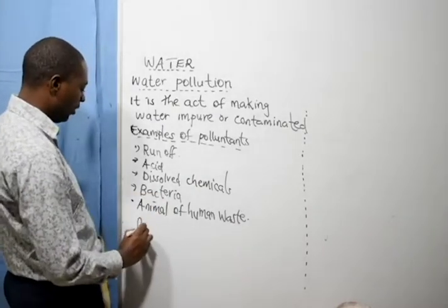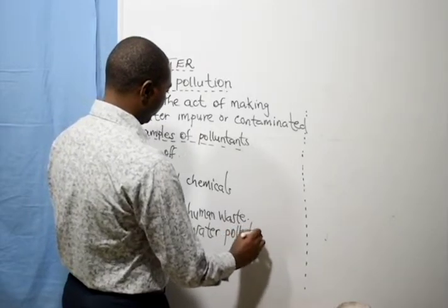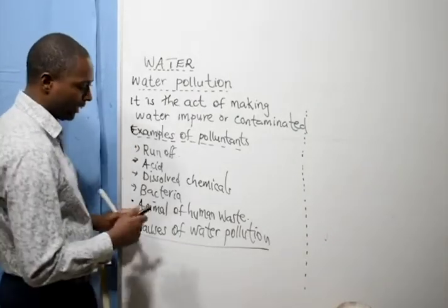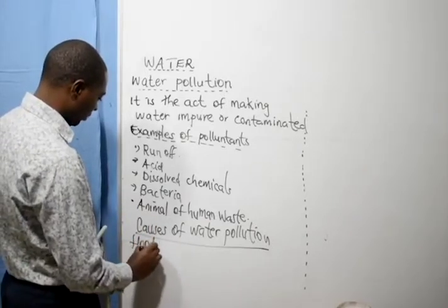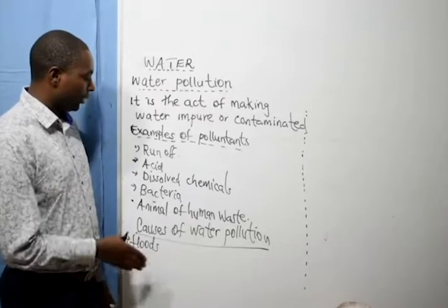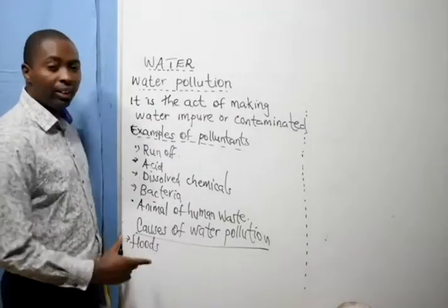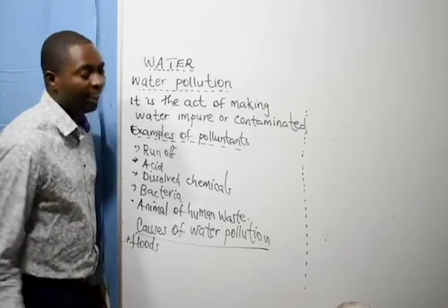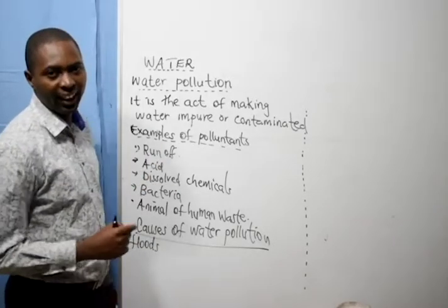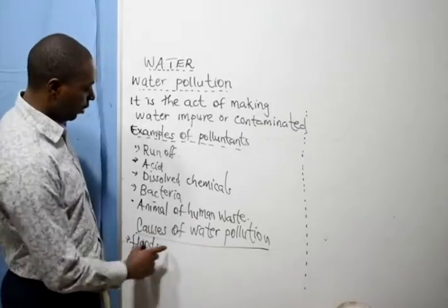The causes of water pollution — number one is floods. Once it rains heavily, the flood water, what we call runoff, carries away soil, the topsoil. This soil may contain some contaminators, and once they are washed downstream, any living thing — plant or animal — that depends on that water suffers the repercussions of polluted water. Floods is one cause of water pollution.